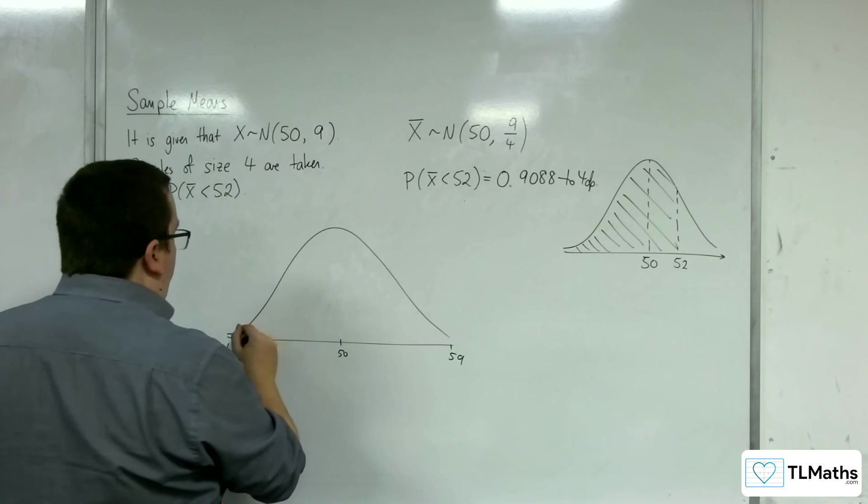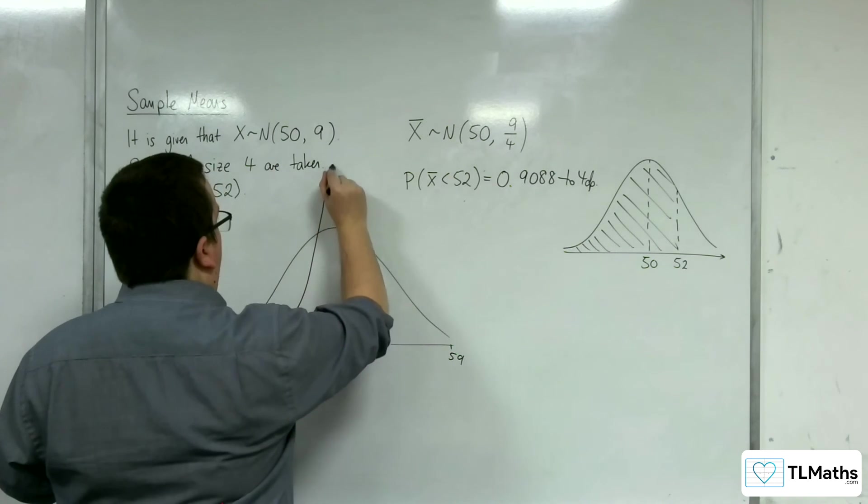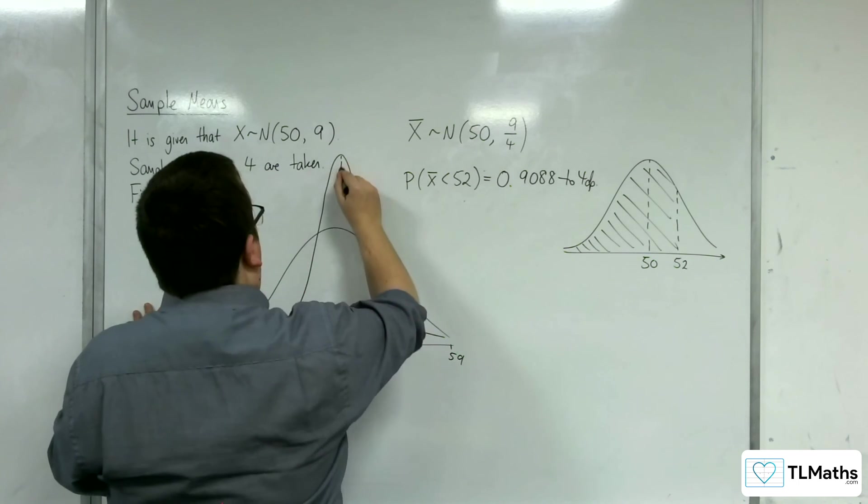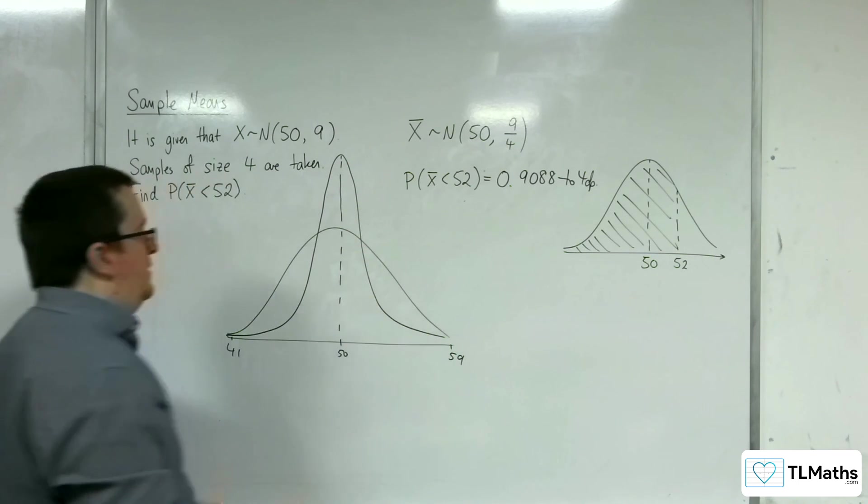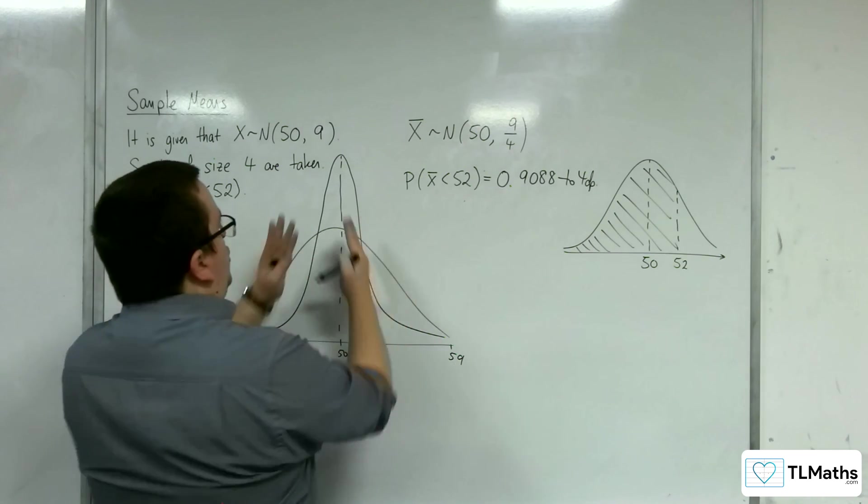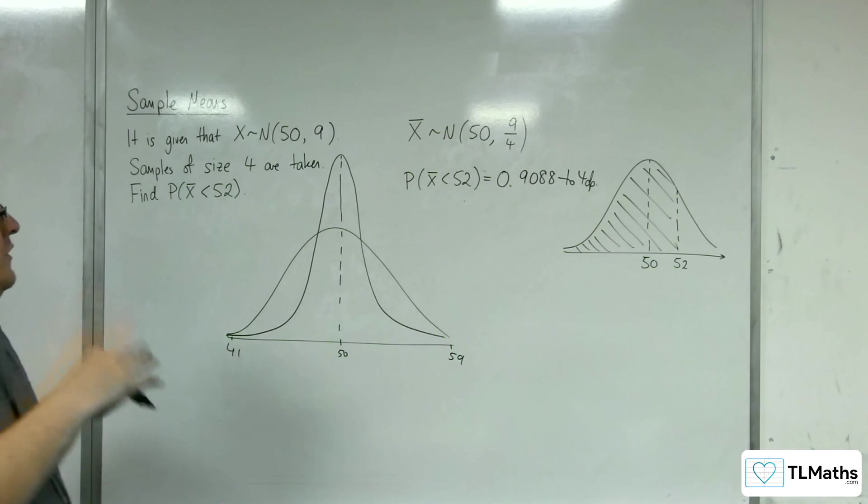When you've taken samples of size 4, it'll be distributed like this. Stuck in the center still, but much more compacted, pushing it upwards, because the areas of these two shapes have to be the same, because they're both 1.